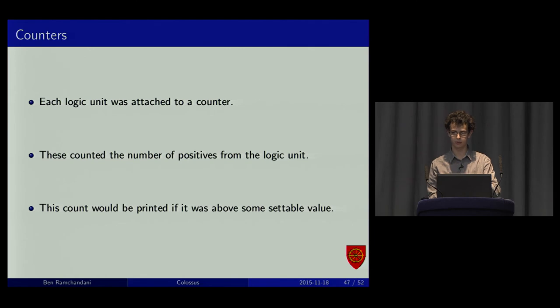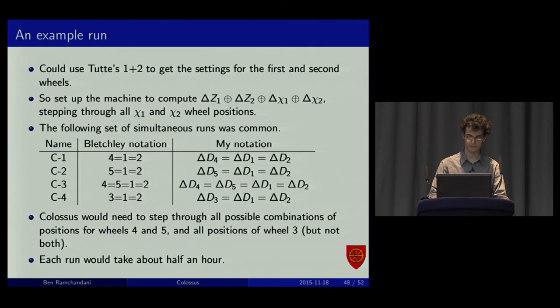Each one had a counter, and with print, you could set the value at the start of the run. Just statistics to work out how many, what was the likely output, and have them higher than that. And they'd all be printed out. And then, at the end of the run, you'd go through, and you'd see if any were much higher than the rest. And you could work out what the chance it was that that one was the correct one. Correct positions of the chi wheels.